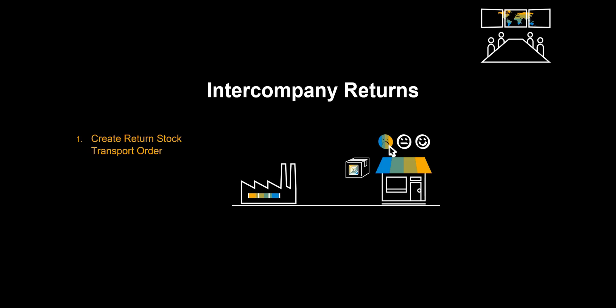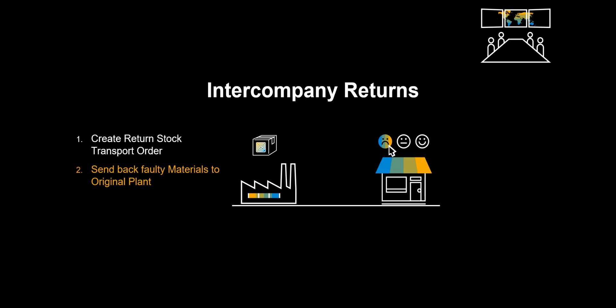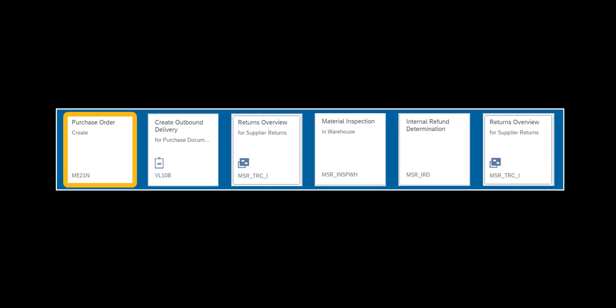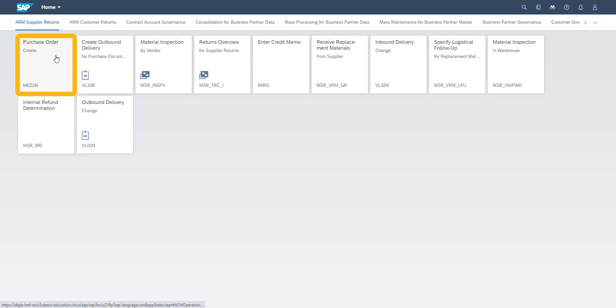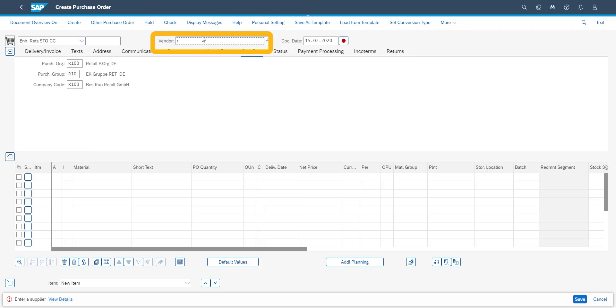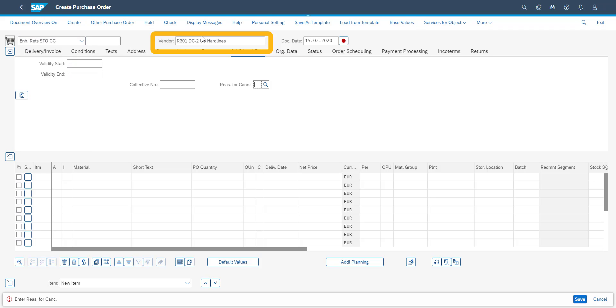Let's now turn our attention to our second scenario, the intercompany returns. In this scenario we will start off by creating the return stock transport order. Next we will send back the faulty material to the original plant, where the warehouse will inspect the materials, and after the follow-on activities have been completed, the returning plant will be reimbursed. We start our orderly returns process with the creation of an order. We select the order type — in this case a return stock transport order — and enter the receiving plant in the vendor field.